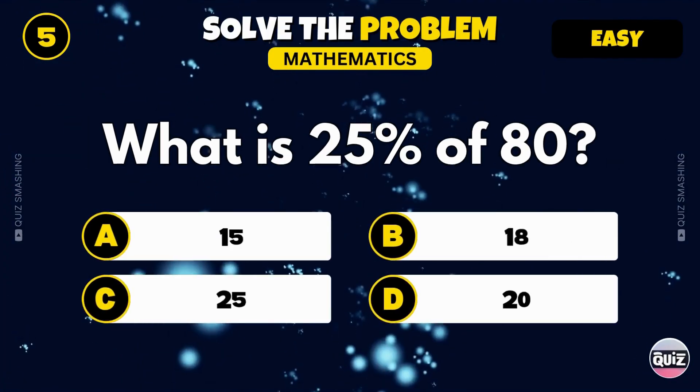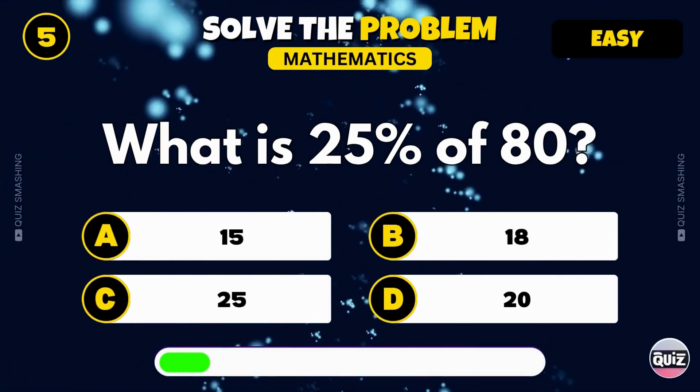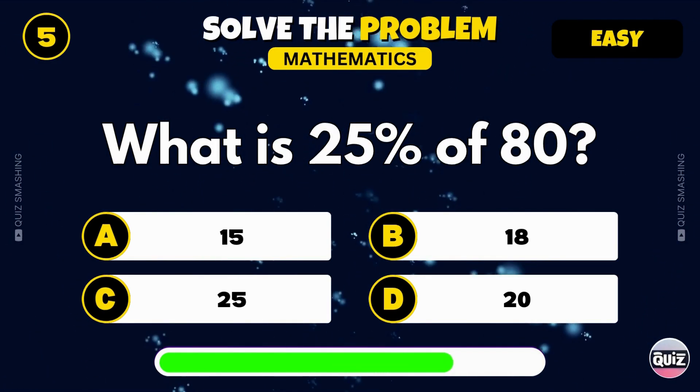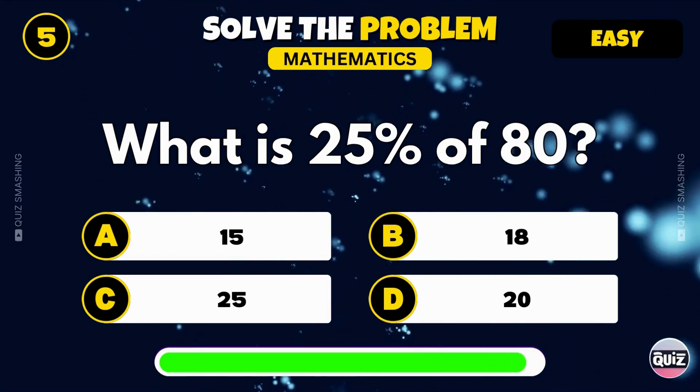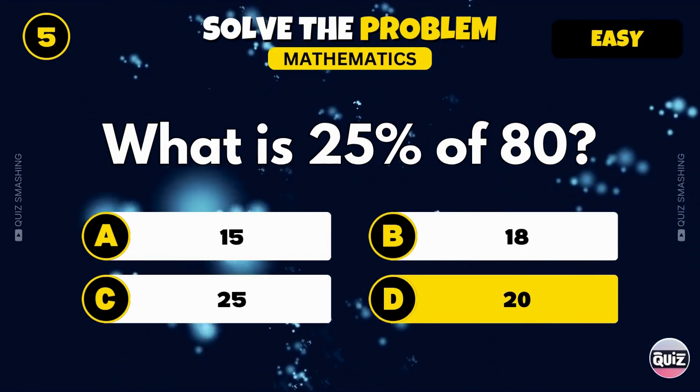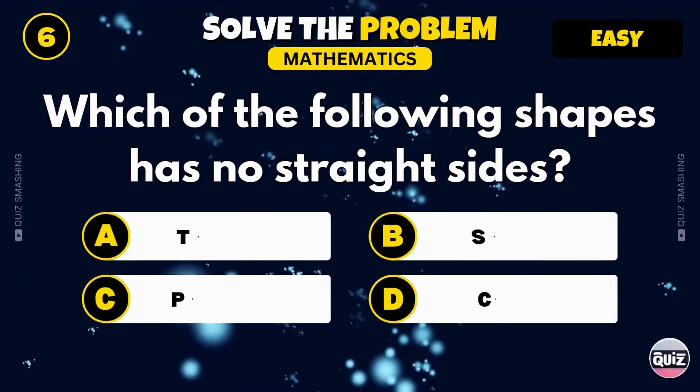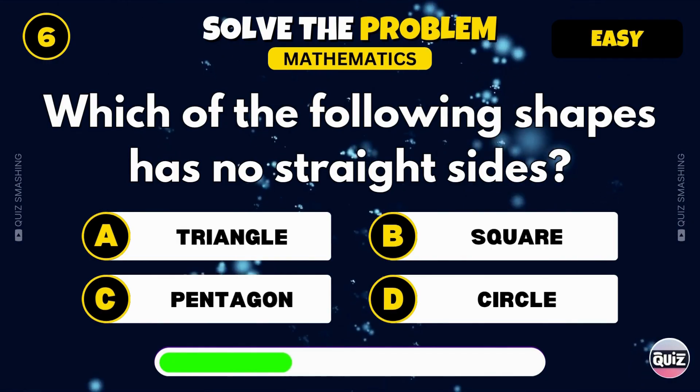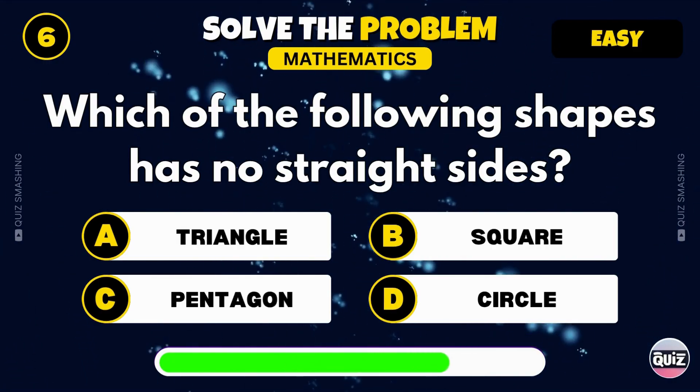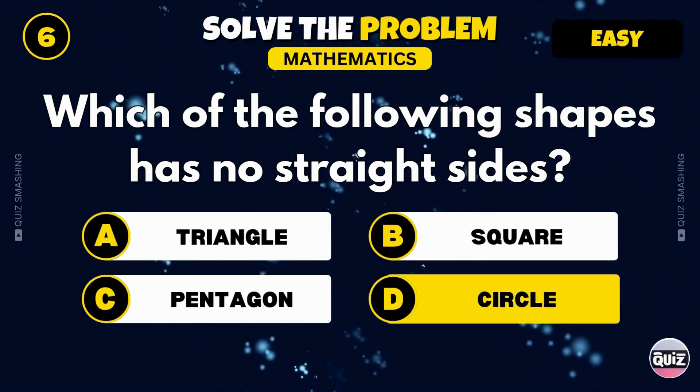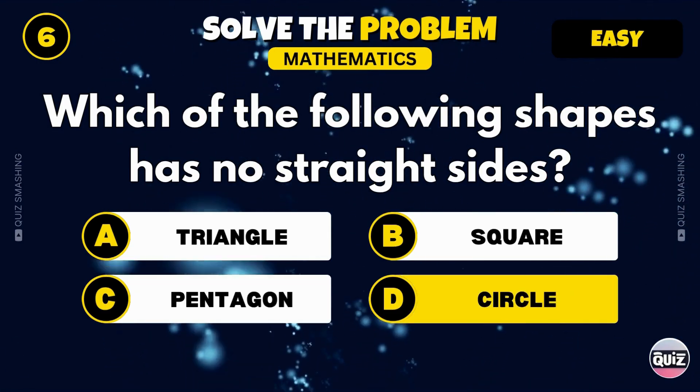What is 25% of 80? Nice work, it's 20. Which of the following shapes has no straight sides? Correct, it's a circle.